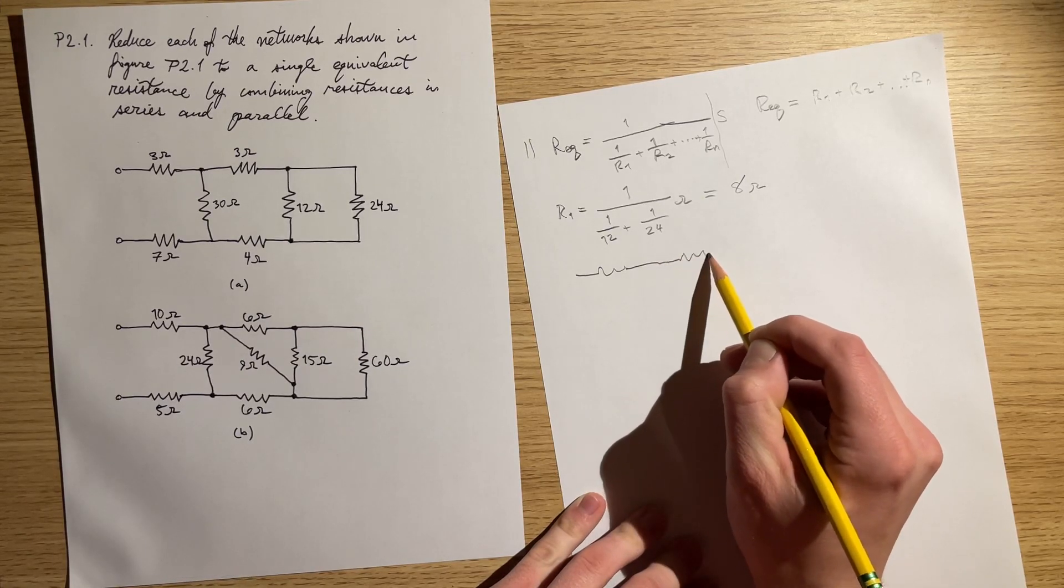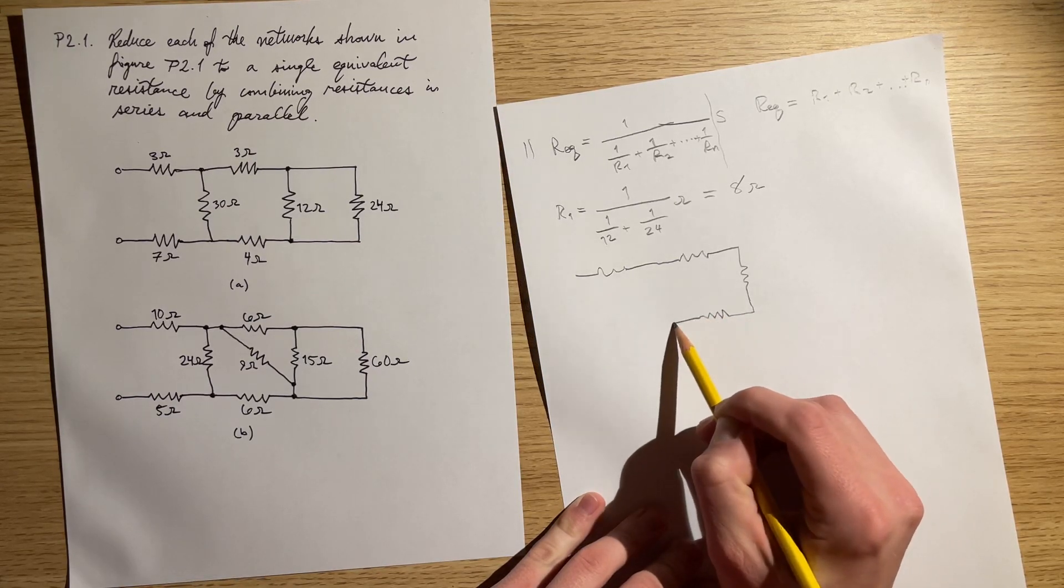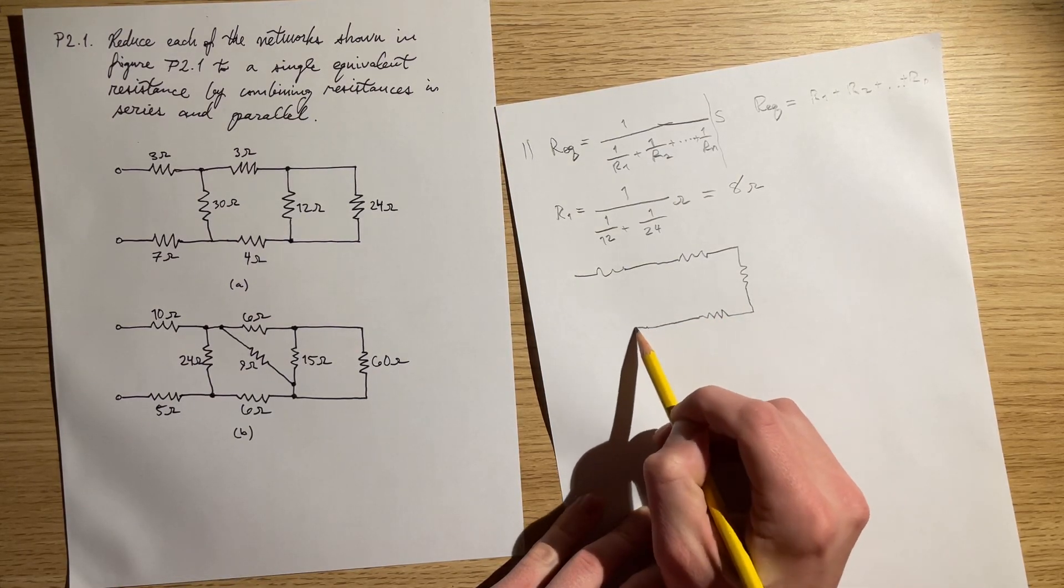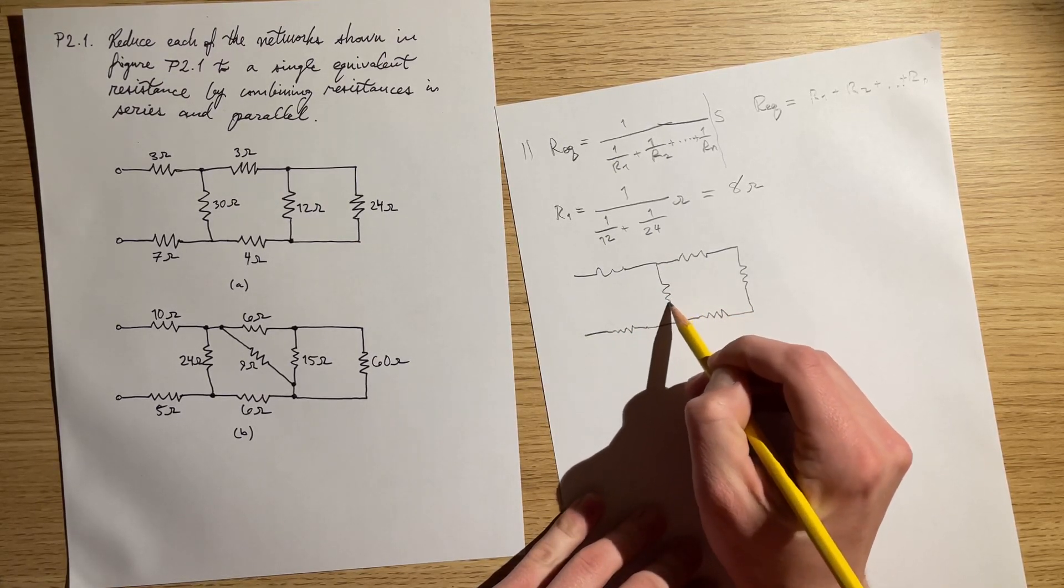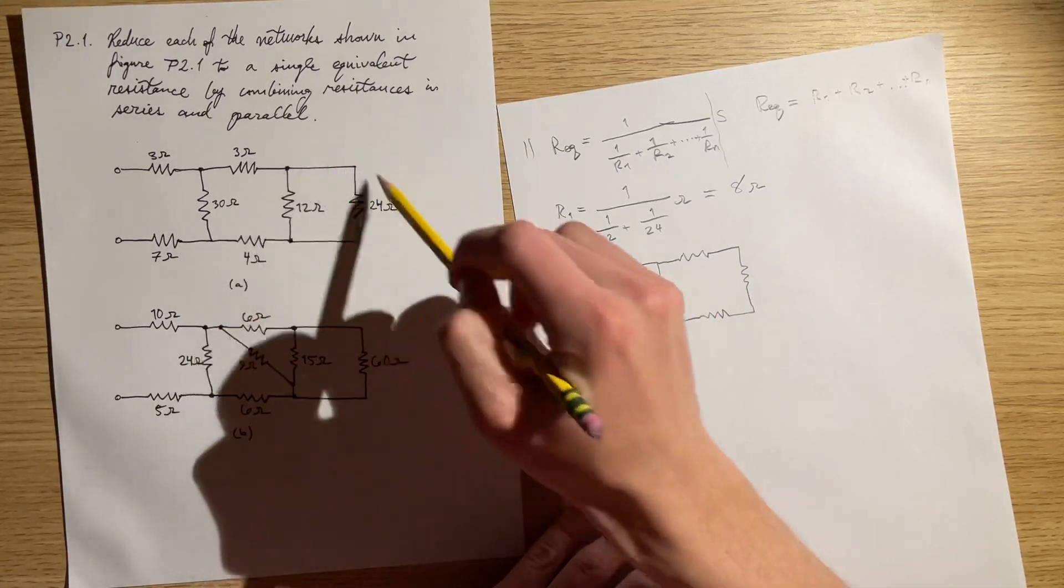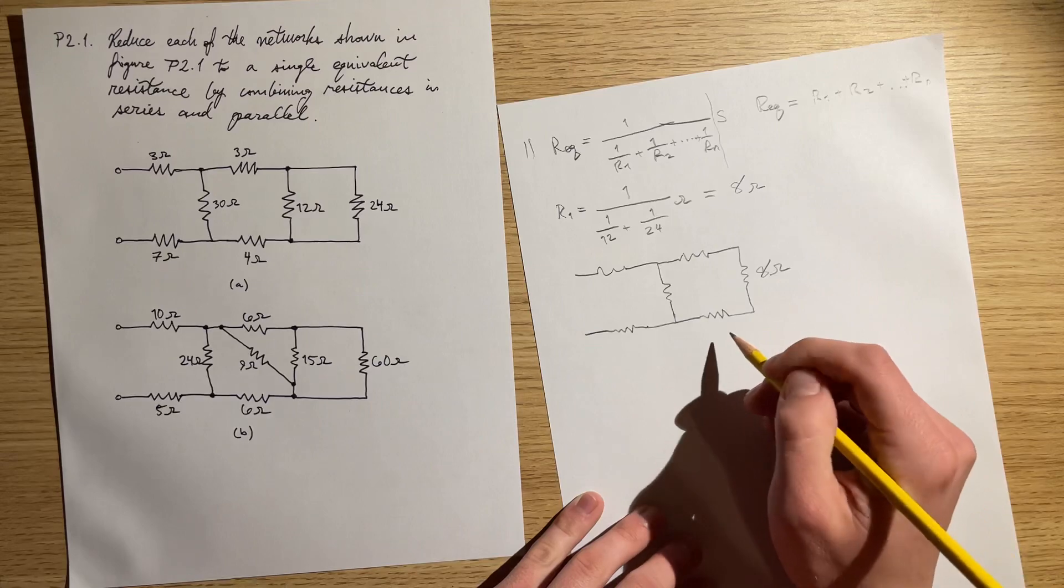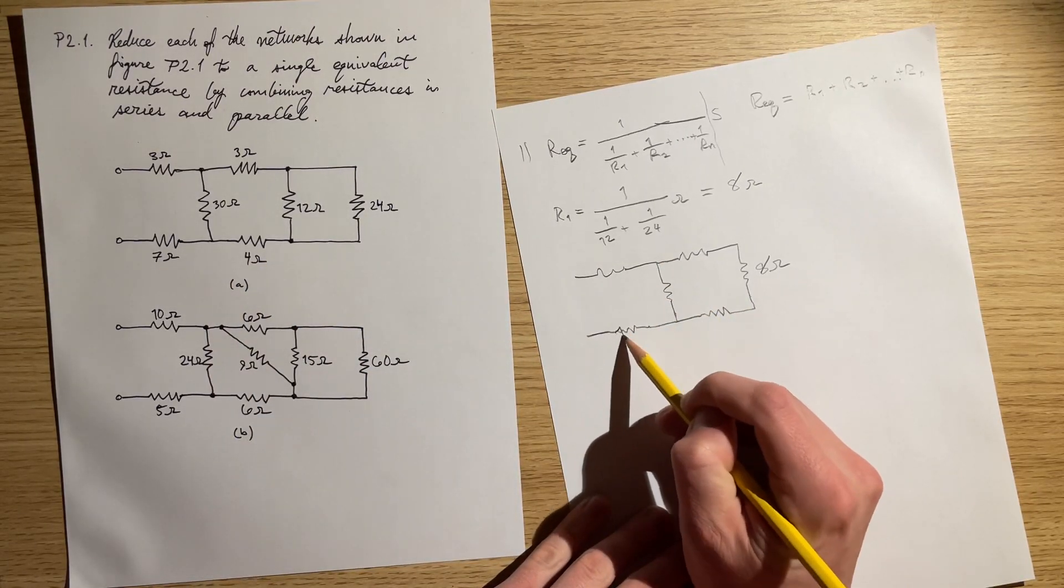Now this circuit simplifies to resistor right here, resistor right here, resistor right here, and resistor right here with a resistor in the middle. Now this little section right here is 8 ohms, and so on and so forth with these. That's basically the idea.